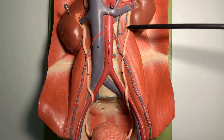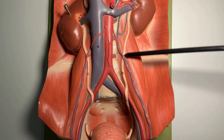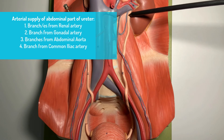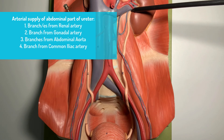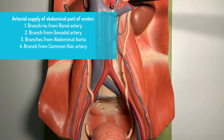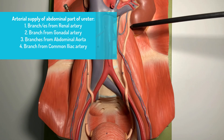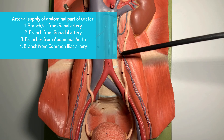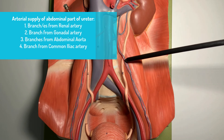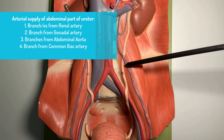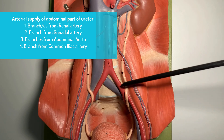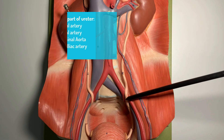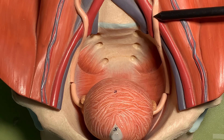Let's take the arterial supply of the abdominal part of the ureter. The upper part of the abdominal ureter gets its blood supply: number one, from the renal artery; after that it gets a branch from the gonadal artery; then it gets a branch directly from the aorta; and after that, when it reaches near the common iliac, it gets a direct branch from the common iliac artery.